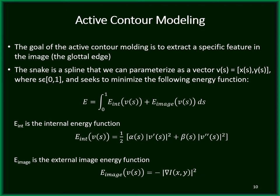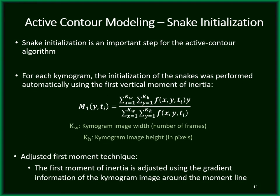The snake is a spline that we can parameterize as a vector. The goal is to minimize an energy function which is the summation of an internal energy function — which controls the shape of the snake — and an external energy function that is derived from the image gradient. The snake deforms until it captures the glottal edges. The first step in active contour modeling is to initialize the snake, which should pass through the center of the glottal edges. For snake initialization, we use the first moment of inertia. We adjust this moment line to find a more accurate center line for the glottal edges.